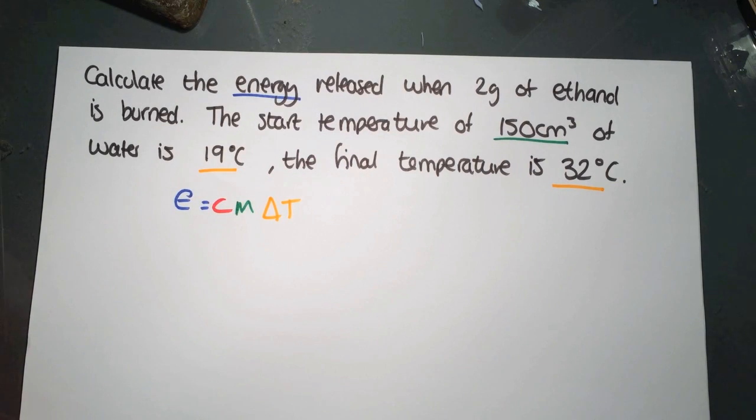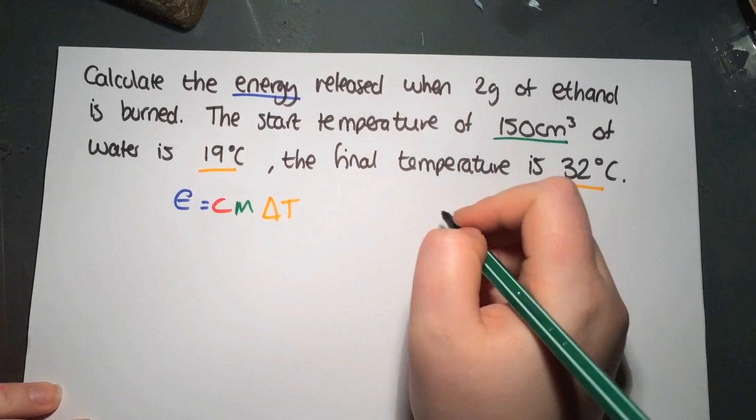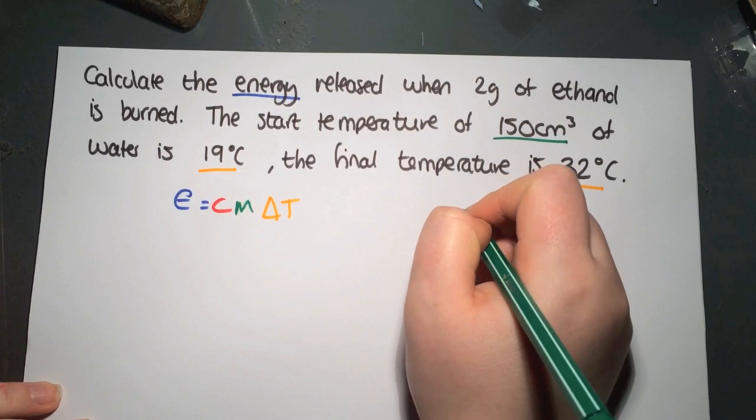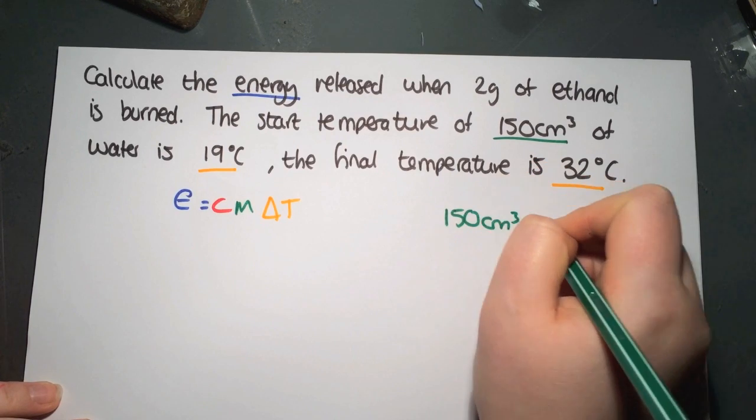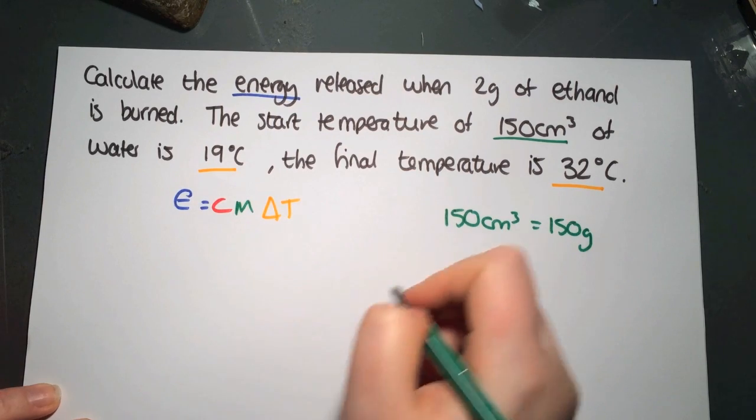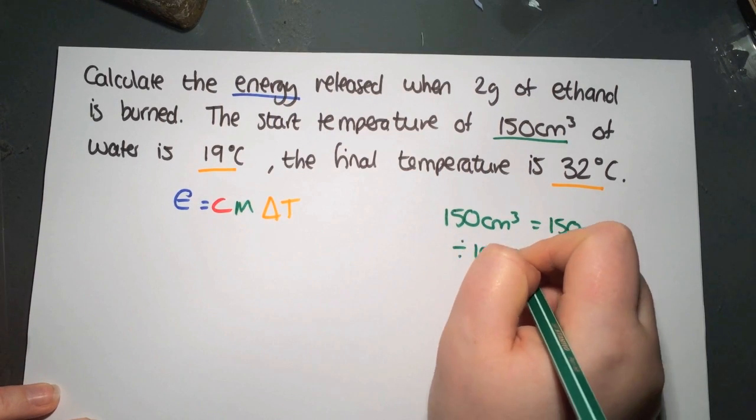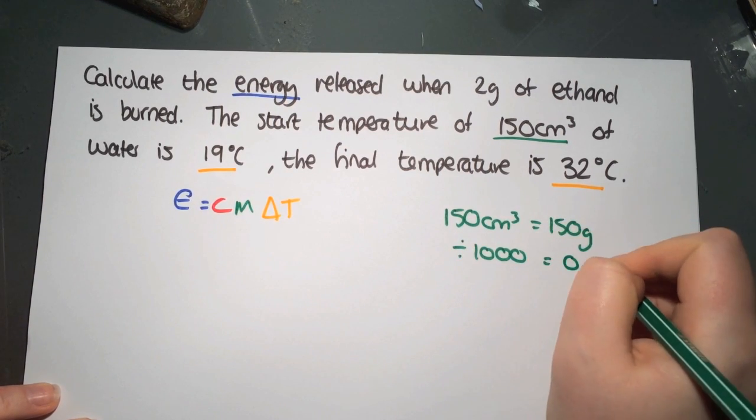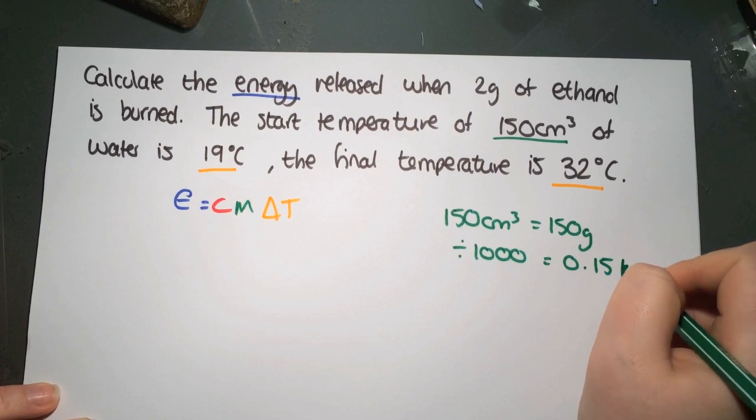First thing that we're going to do is change our water. We're going to do that again. So we have 150 centimeters cubed, which equals 150 grams. We're going to divide by 1,000. This will give us 0.15 kilograms.